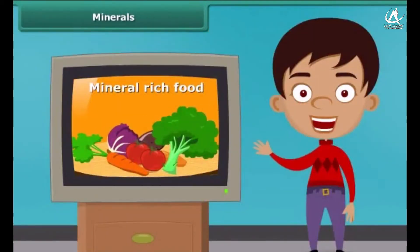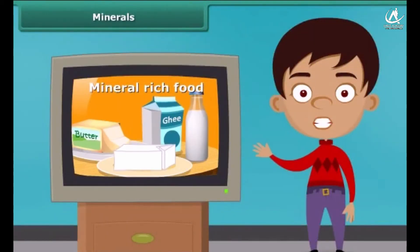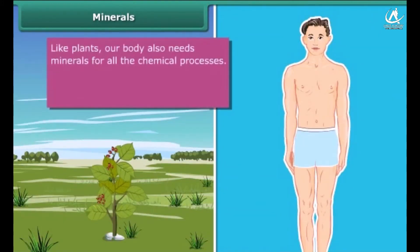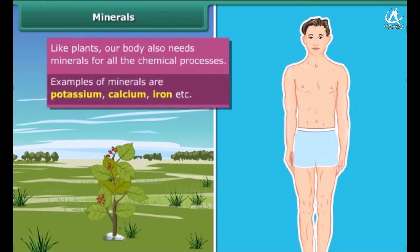You might have seen many advertisements of mineral-rich food items. Now let's know why they are so important. Actually, plants need minerals for growth. Besides this, a body also requires minerals in small quantities for all the chemical processes. Potassium, calcium, iron, etc. are some common examples of these minerals.